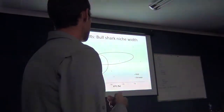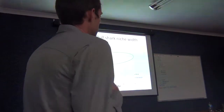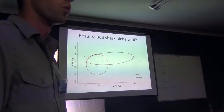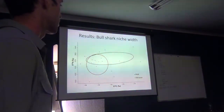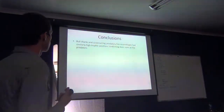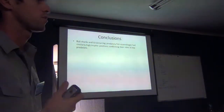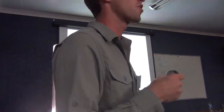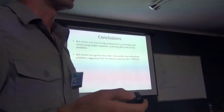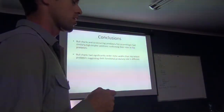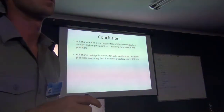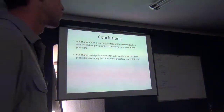This is backed up by literature on other shark species which typically, as they grow larger, are able to move further from the study site. Essentially, although bull sharks and the teleost predators had a similarly high trophic position, bull sharks had a significantly wider niche width, suggesting that bull sharks have a greater impact through predation on their marine environments compared to the teleost components of the top predatory fish community.